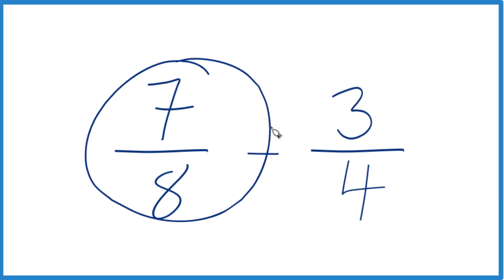Let's figure out 7 eighths minus 3 fourths. How do you do that?